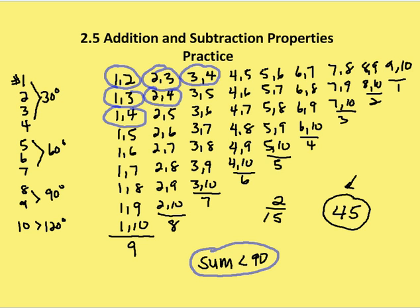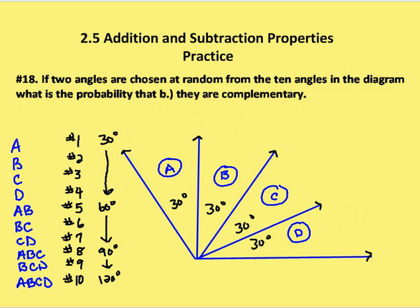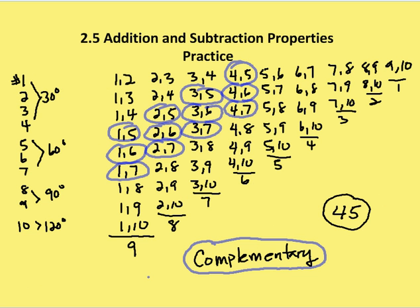In the next part of the question, we're asked: if we choose 2 angles at random from the 10 angles given, what's the probability that they are complementary? We go back to our list of combinations and see that 1 and 5, 1 and 6, 1 and 7, 2 and 5, 2 and 6, 2 and 7, 3 and 5, 3 and 6, 3 and 7, 4 and 5, 4 and 6, and 4 and 7 are all going to be complementary. So of the 45 combinations, 12 will be complementary — their sum adds up to 90 degrees.